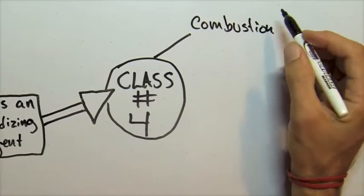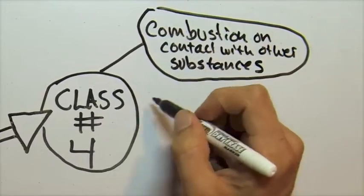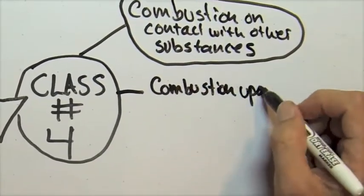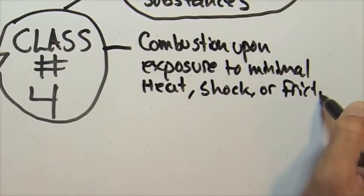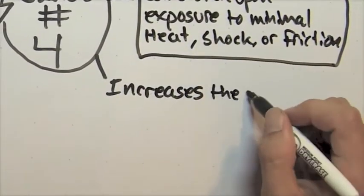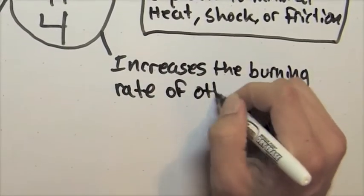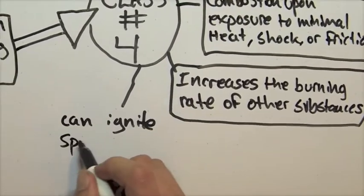Class 4 oxidizers will combust upon contact with some substances. They will also combust upon exposure to minimal heat, shock, and friction. These also increase the burning rate of other substances. And finally, can ignite spontaneously.